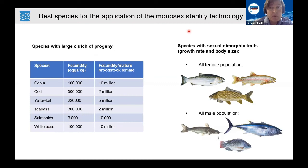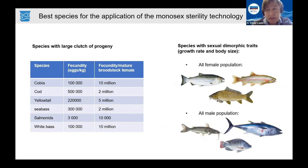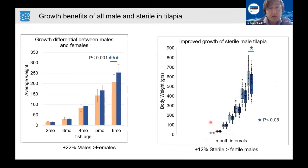The technology works well with species carrying sexually dimorphic traits. For example, all-female populations would be preferred in Atlantic salmon, rainbow trout, and carp, where females typically grow larger than males. All-male populations would be preferred for bluefin tuna, channel catfish, and tilapia, where males grow larger than females.